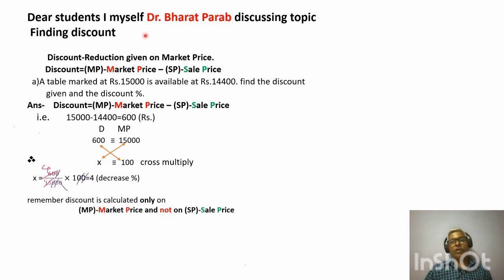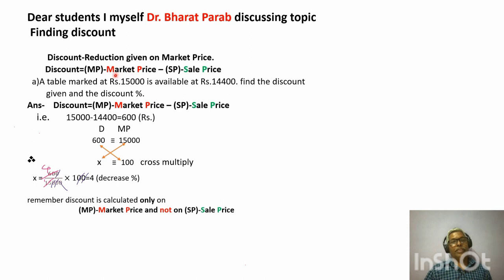Dear students, I am Dr. Bharat Parap discussing the topic of finding discount. The definition first: discount is the reduction given on market price. The mathematical calculation is: Discount = MP (market price) minus SP (sale price). Some shops or companies reduce the price of their product to increase sales. If given in rupees that is the direct value, or sometimes it is given in percentage and you need to calculate in rupees.